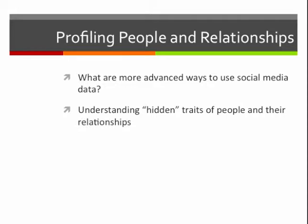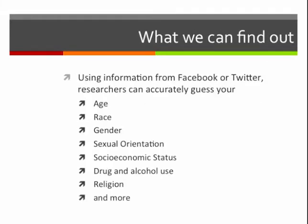One other thing I want to add is research on profiling people in relationships. All the examples so far are ways that information you post in social media is shared with others, sometimes with people you don't expect. But there are a lot of new computational techniques that allow us to infer traits about users even if they're not explicitly stating it. We can infer things like trust and tie strength in relationships even without explicit information. Examples of things we can predict include age, race, gender, sexual orientation, socioeconomic status, drug and alcohol use, religion, intelligence, political preferences, and personality traits.